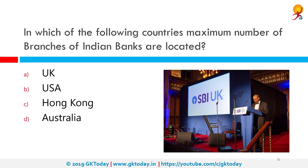In which country do maximum branches of Indian banks exist? Maximum branches are located in the UK. SBI has the largest number of overseas branches at 52, followed by Bank of Baroda at 50 and Bank of India at 29. State-owned banks have the largest presence in the United Kingdom at 32 branches, followed by Hong Kong and UAE with 13 each, and Singapore with 12.